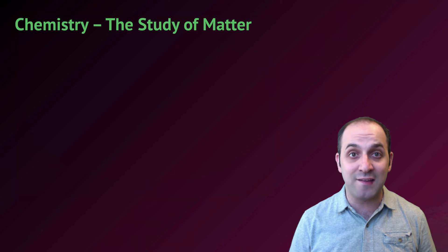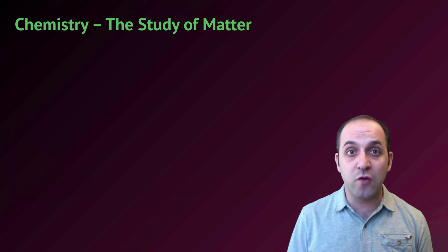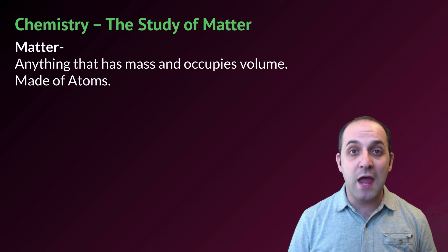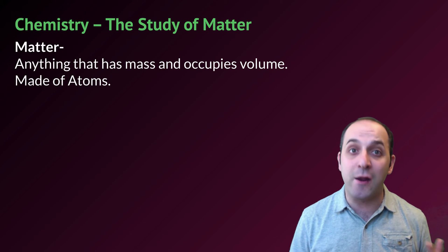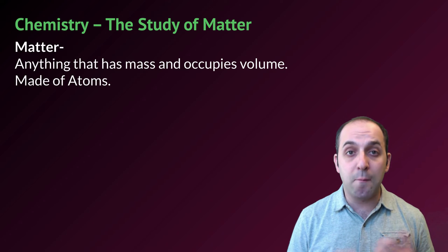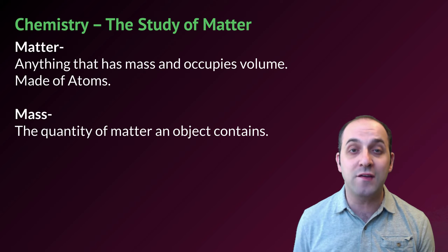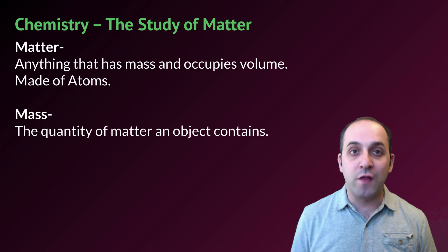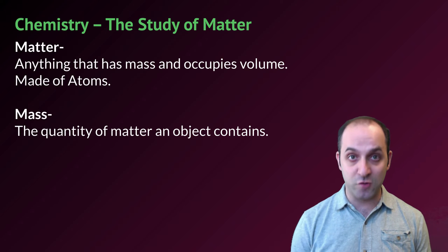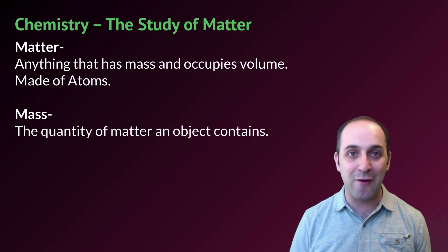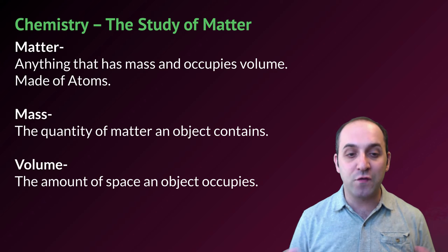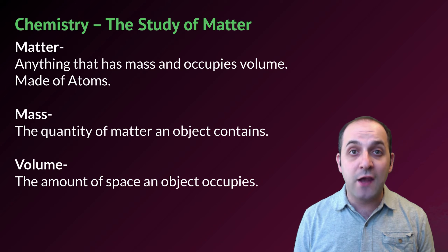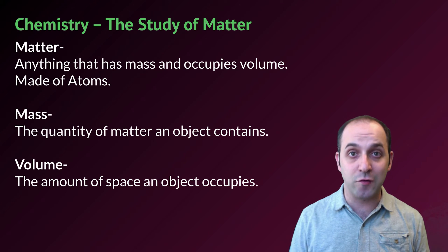Chemistry is basically just the study of matter and how matter reacts and interacts with other types of matter. An obvious question is: what is matter? The definition we're going to use is that matter is anything that has mass and occupies volume, and in order to do this in the universe you basically need to be made out of atoms. Mass is the quantity of matter that an object contains — that's the larger project of the large hadron collider and the Higgs boson — and volume is the amount of space that an object occupies.